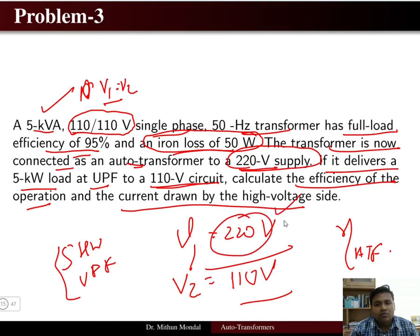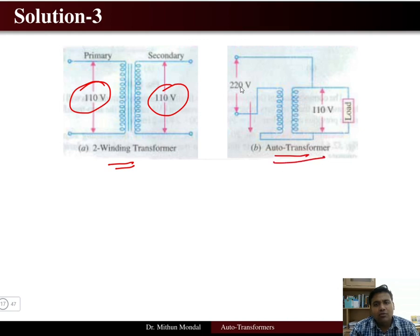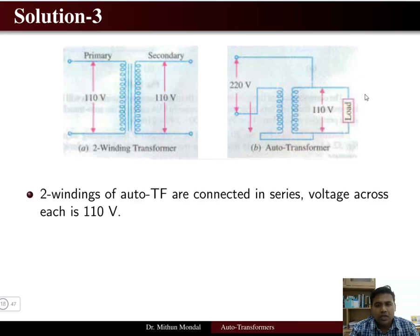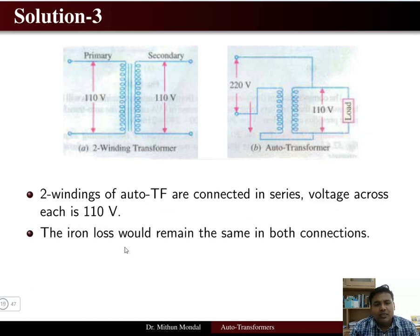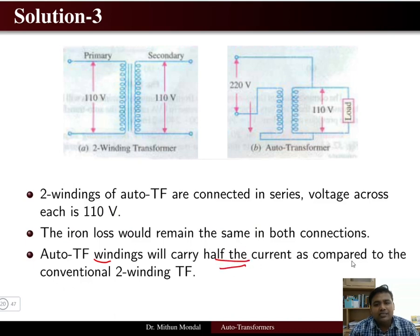In the original two winding connection, 110 volt input gives 110 volt output — an isolation transformer. When connected as an auto transformer, 220 volt is input V1 and 110 volt is V2 across the load. The two windings are connected in series with 110 volt across each. The iron loss remains the same in both connections.